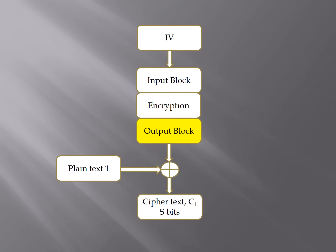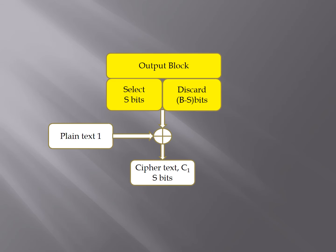The output block looks like a simple block, but it actually consists of two parts: the select part and the discard part. The leftmost S bits is selected while the rest is discarded. The selected S bits will then be XORed with the first S bits of the plaintext to produce the cipher text.